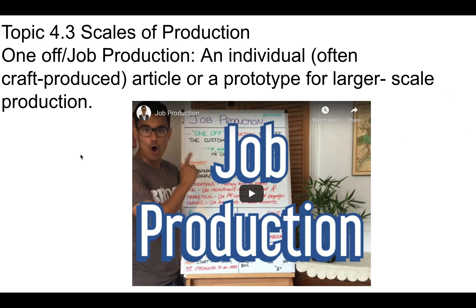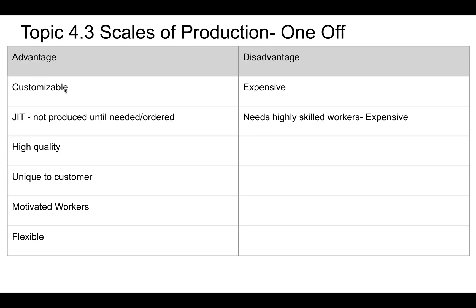There are advantages and disadvantages. One advantage is it's customizable — because it's being made for you, you can say exactly how you want it. If I'm having a suit made, I might choose a red silk lining. If I'm buying a mass-produced suit at Marks & Spencer's, I don't have that choice. It's also just-in-time, produced as needed when ordered, so you're not holding stock around. And generally they're high quality.